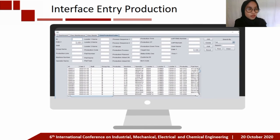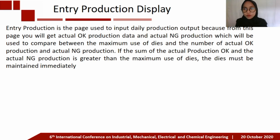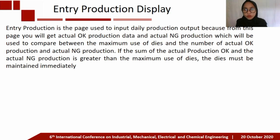This is the interface of Entry Production. Entry Production is a page used to input daily production output. From this page you get actual OK production data and actual NG production data, which are used to compare between the maximum use of dice and the number of actual OK and actual NG production. If the sum of actual OK production and actual NG production is greater than the maximum use of dice, the dice must be maintained immediately.